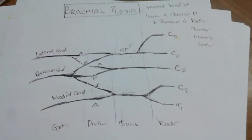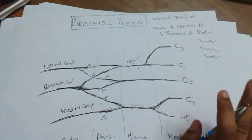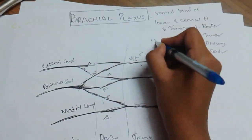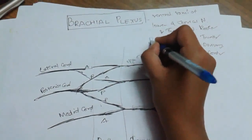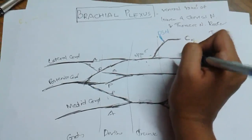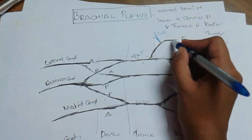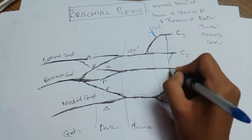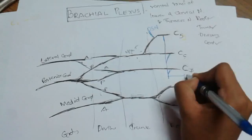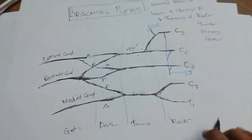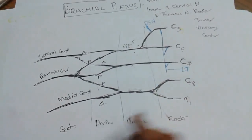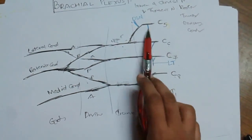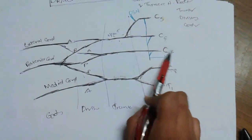Now, the branches coming from each component. From the roots: from C5, there will be the dorsal scapular nerve. And from C5, C6, and C7, there will be the long thoracic nerve. These are the two branches from the roots: dorsal scapular nerve from C5, and long thoracic nerve from C5, C6, C7.